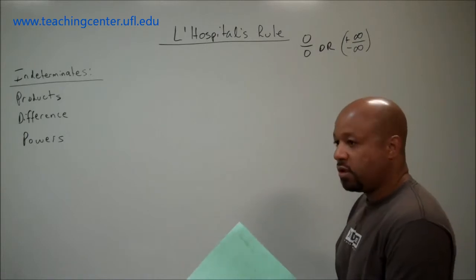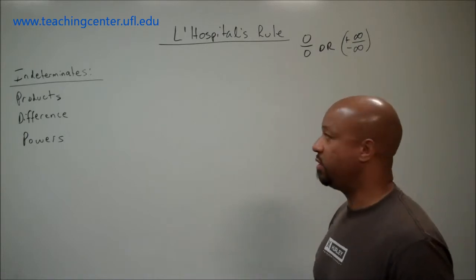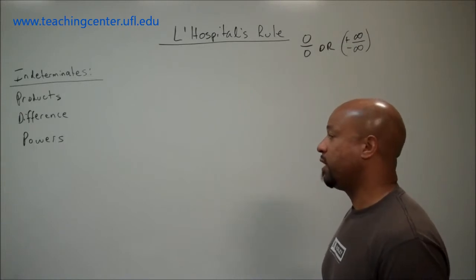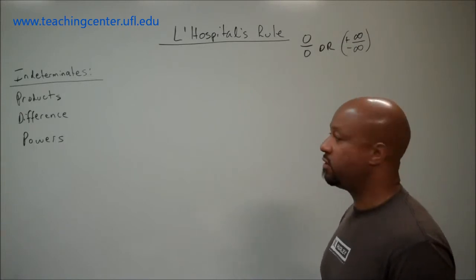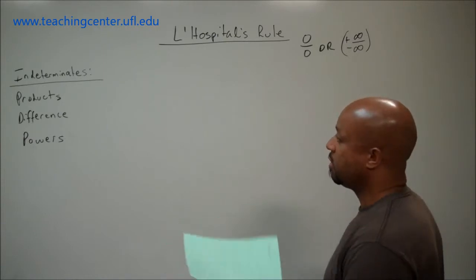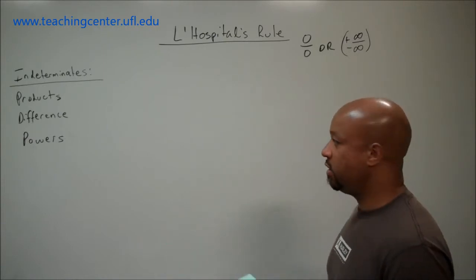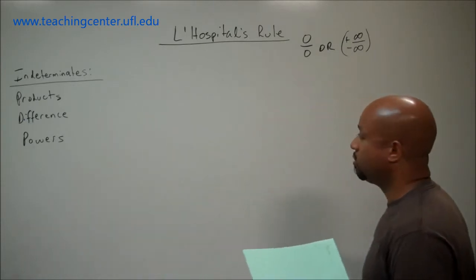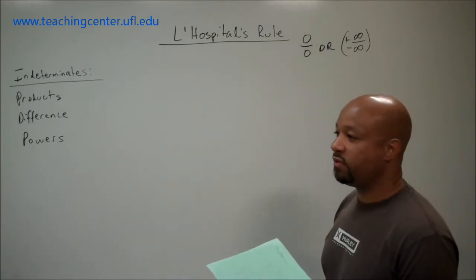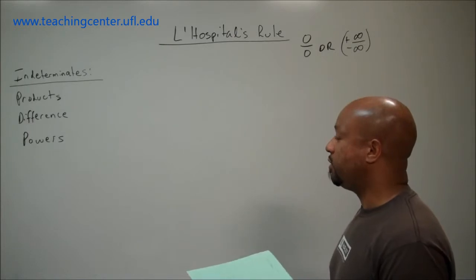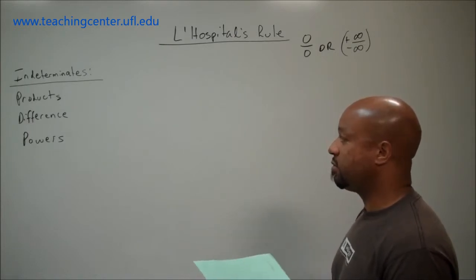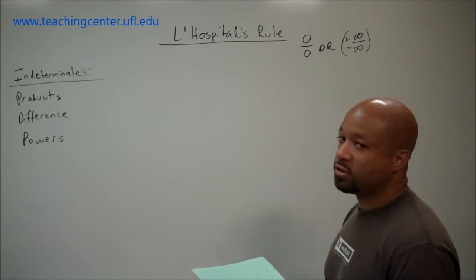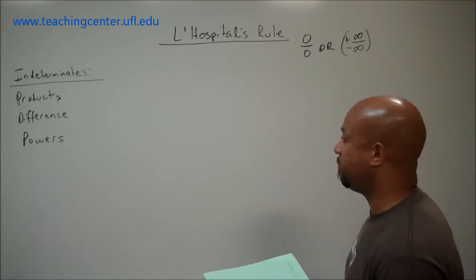But sometimes when we're trying to evaluate limits, we encounter different indeterminate forms. There are actually three different types of indeterminate forms we may encounter: indeterminate products, indeterminate differences, or indeterminate powers. We're going to go through each one of these and discuss how we apply L'Hopital's Rule when we encounter them.